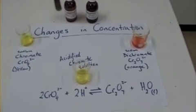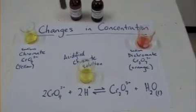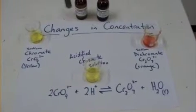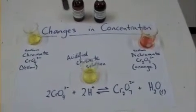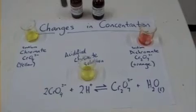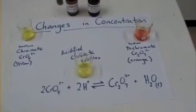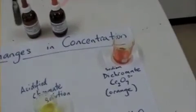So the first one we're going to look at is a chromate and dichromate system. On the left we've got sodium chromate, and it's bright yellow. And on the right we've got some dichromate, sodium dichromate, and it's orange. It's a nice orange, isn't it?